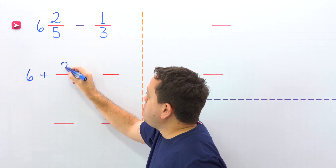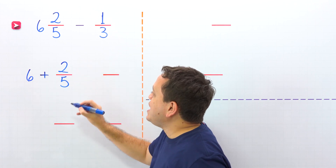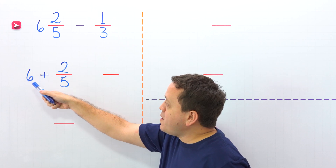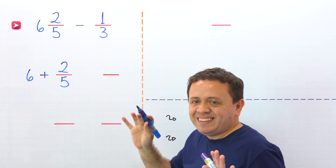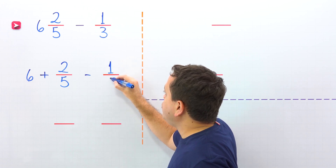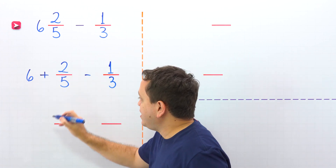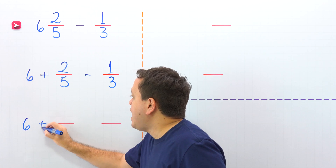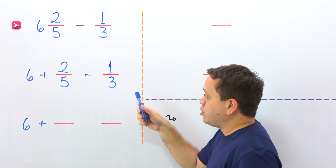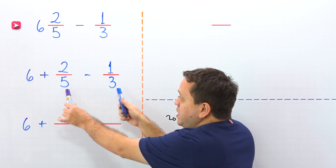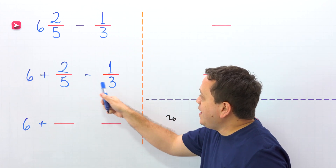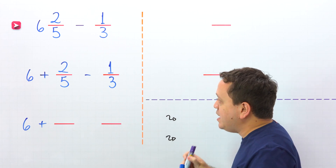The proper fraction will be 2 fifths. We rewrote the mixed number 6 and 2 fifths as the sum of a whole number and a proper fraction. Then we have the minus sign and we continue with the fraction 1 third. Now we need to subtract 2 fifths minus 1 third. These two fractions have different denominators. To find the difference, we need the least common multiple of the denominators, or the least common denominator.